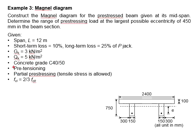The member is a pre-tensioned beam. The partial prestressing method is being used and the f_ci is considered as two-thirds of the f_ck. You may pause the video for a while for you to work out the solution.